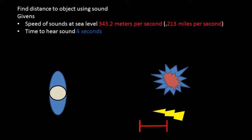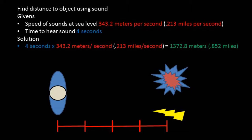Every second that passes, the sound is traveling 343.2 meters or 0.213 miles per second. So after 4 seconds, the sound has traveled a distance of 1372.8 meters or 0.852 miles. We get the answer by multiplying the speed of sound by the time between flash and bang of 4 seconds.